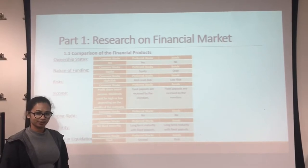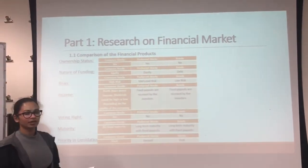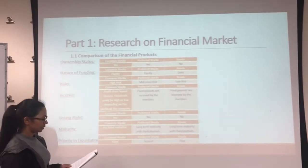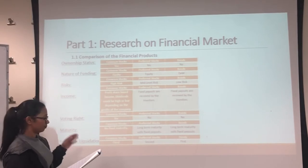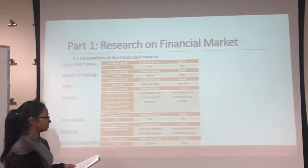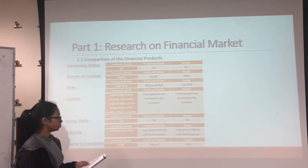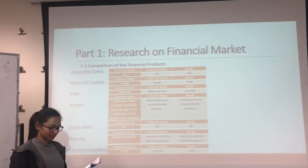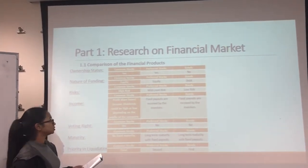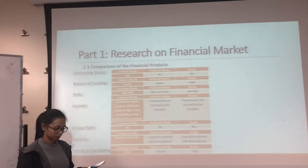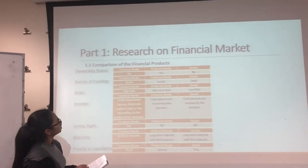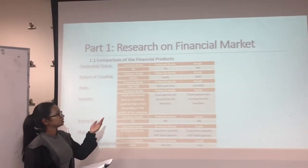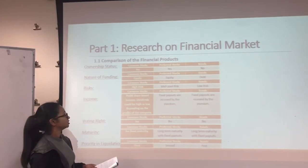Hi everyone, I am Chamody Priyanka. I am going to talk about financial products. There are three main products: bonds, common stocks, and preferred stocks. These products can be compared on the basis of different criteria. The first criterion is ownership status, which shows whether a given financial product gives ownership of the company to the holder. Common stocks and preferred stocks give ownership status, whereas bonds do not.